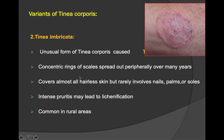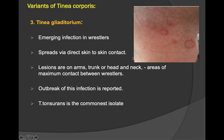Tinea imbricata covers hairless skin but rarely involves the nail, palm, and sole. Intense pruritus may lead to lichenification; it is more common in rural areas. Tinea gladiatorum is more common in wrestlers and spreads by direct skin-to-skin contact. Lesions are seen on the arms, trunk, head, and neck — areas of maximum contact in wrestlers.